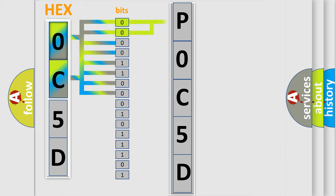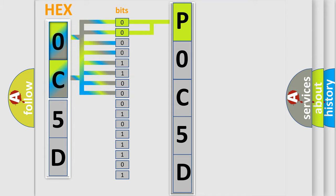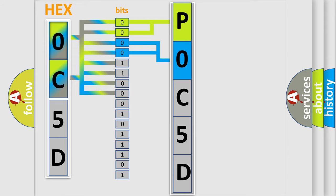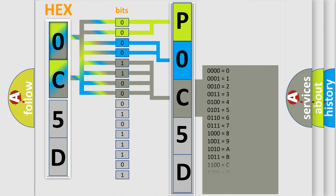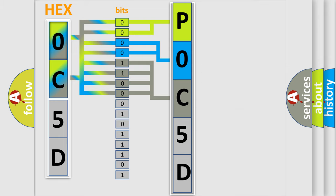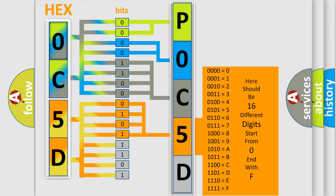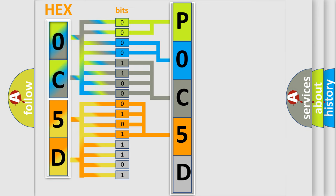By combining the first two bits, the basic character of the error code is expressed. The next two bits determine the second character. The last four bits of the first byte define the third character of the code. The second byte is composed of a combination of eight bits. The first four bits determine the fourth character, and the combination of the last four bits defines the fifth character. A single byte conceals 256 possible combinations.